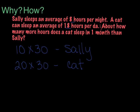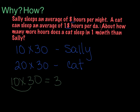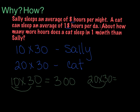We're going to use our extended multiplication that we learned in the last couple of lessons. When we look at 10 times 30, we multiply our basic fact — 1 times 3 — and then add in 2 zeros, giving us 300. Then for the cat, 20 times 30: our basic fact is 2 times 3, which is 6, and we add in 2 zeros, giving us 600.